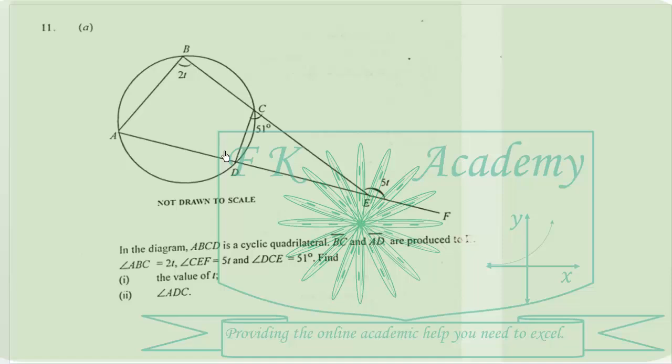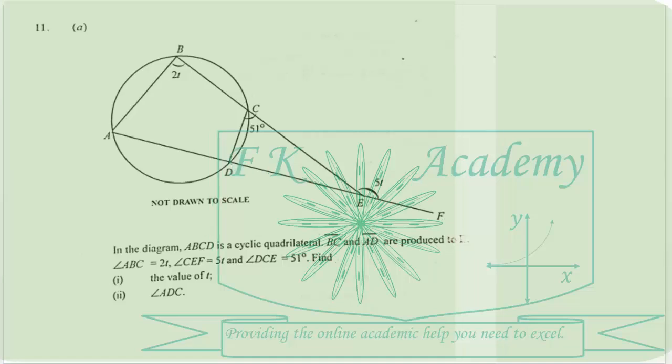Since ABCD is a cyclic quadrilateral, angle here and this one add up to 180 degrees, so this will be 180 minus 2T. The opposite angles of a cyclic quadrilateral add up to 180 degrees.